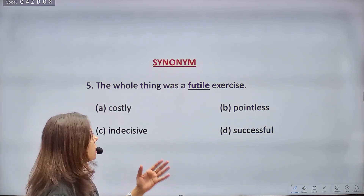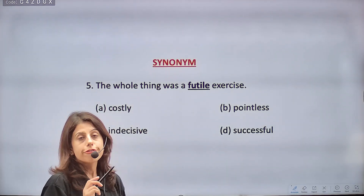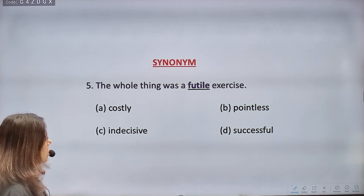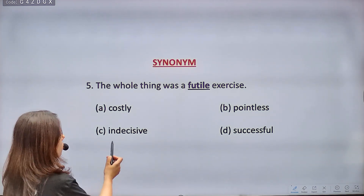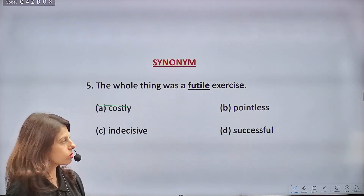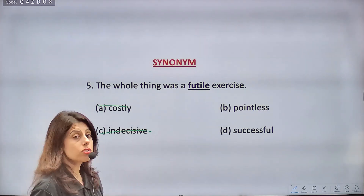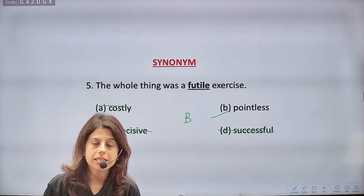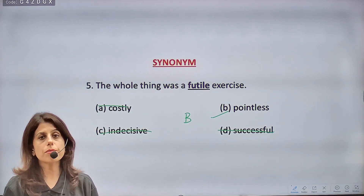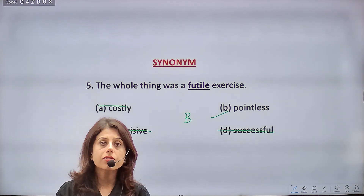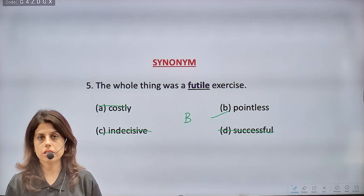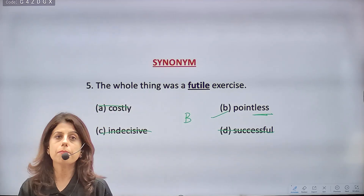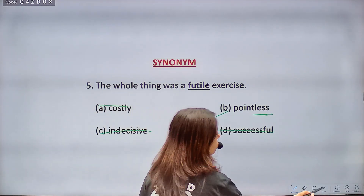Next: 'The whole thing was a futile exercise.' Mark the SYNONYM. Futile was a synonym of abortive, meaning useless. Options: costly (irrelevant — eliminate), indecisive (irrelevant — eliminate), successful (opposite — eliminate). The suffix '-less' means minus/without, so pointless means something with no point at all. Correct answer: POINTLESS. Futile exercise means an exercise that has no value or purpose.